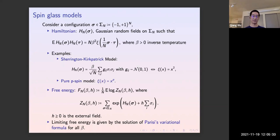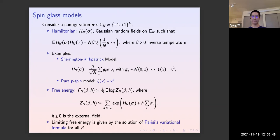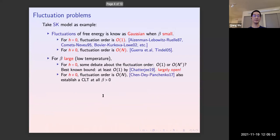For law of large numbers results, the limiting free energy was proved long ago. First, physicist Giorgio Parisi used the replica symmetry breaking theory to give a variational formula. Later, Guerra-Toninelli and Panchenko proved it using different techniques. In today's talk we care about fluctuations — a second-order question.